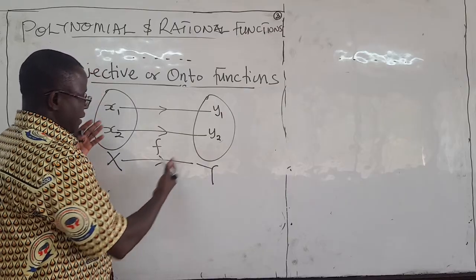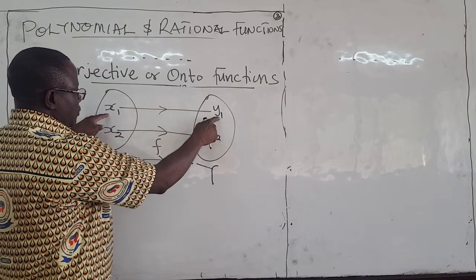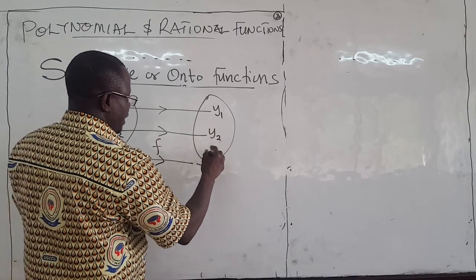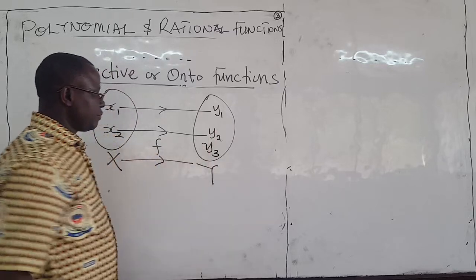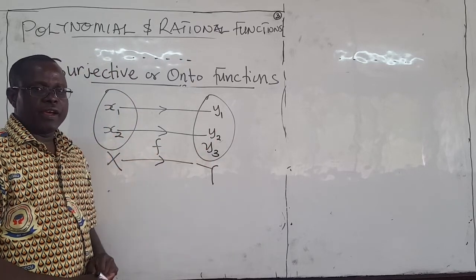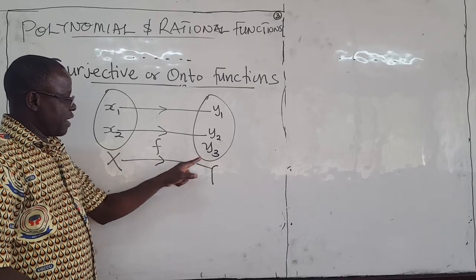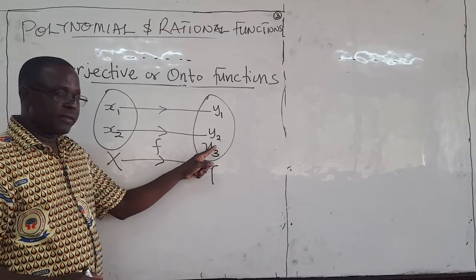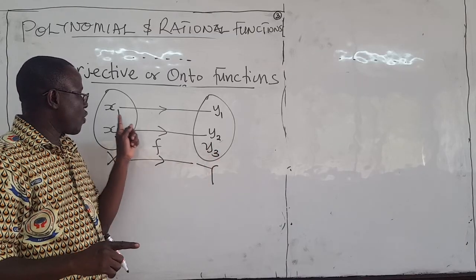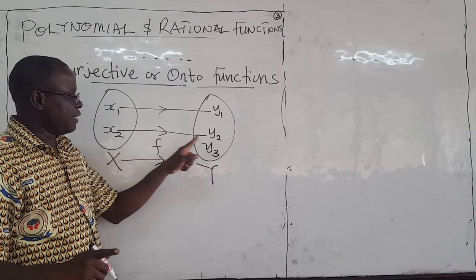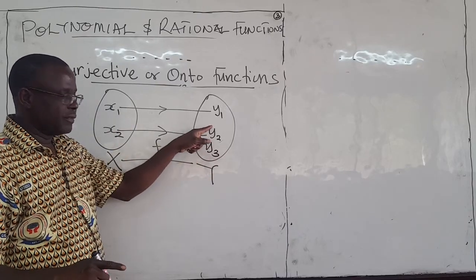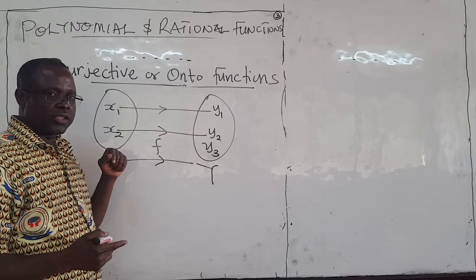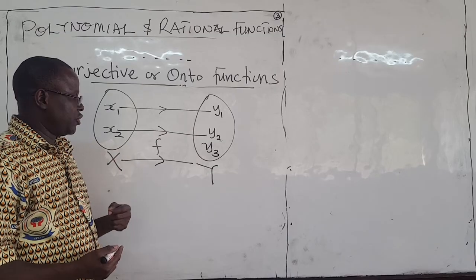Suppose that x1 maps to y1, x2 maps to y2, and I also have an element y3 — and y3 doesn't map to anything here. Then this function will not be onto or surjective, because I can find an element — which is y3 — for which there is no corresponding x. So if you can find an element y such that there is no corresponding element in X, then f is not surjective or onto.